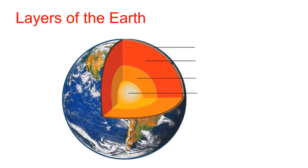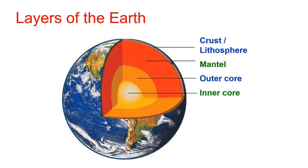In order to understand what happened with Mount St. Helens, we need to take a look at the layers of the earth. Here's a picture of the earth. Right in the middle, the yellow is the inner core. The orange is the outer core. The red is the mantle. And on the very edge is the crust or lithosphere.